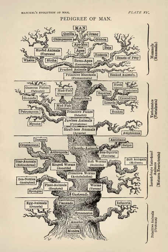Evolution is the central unifying concept in biology. Biology can be divided in various ways. One way is by the level of biological organization, from molecular to cell, organism to population. An earlier way is by perceived taxonomic group, with fields such as zoology, botany, and microbiology, reflecting what were once seen as the major divisions of life.